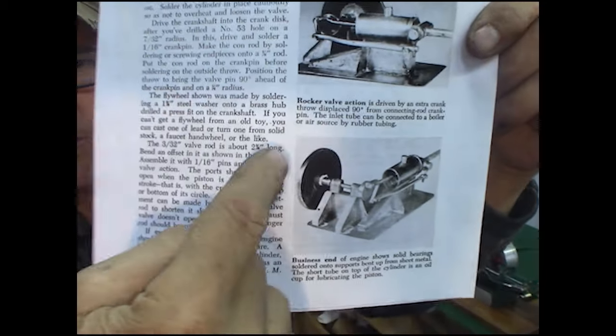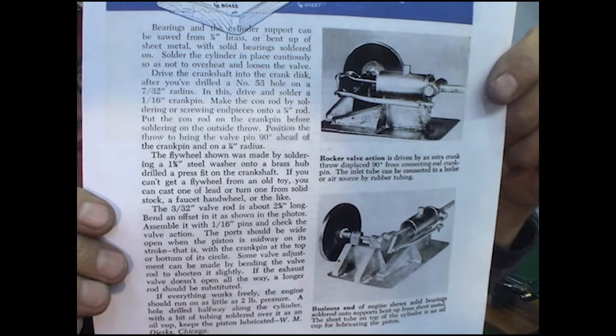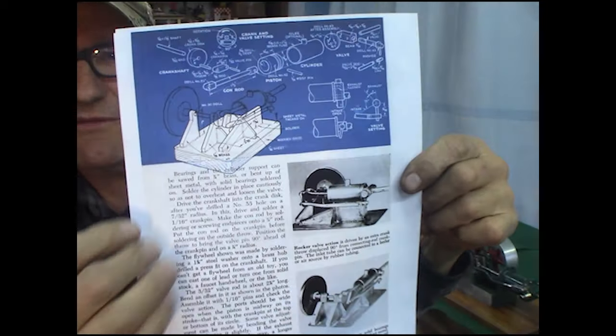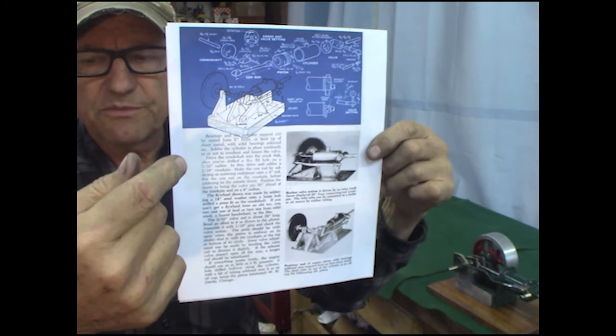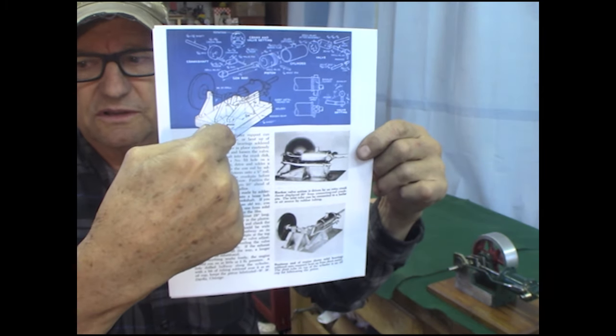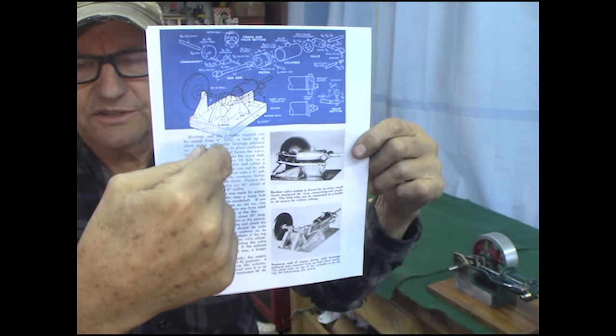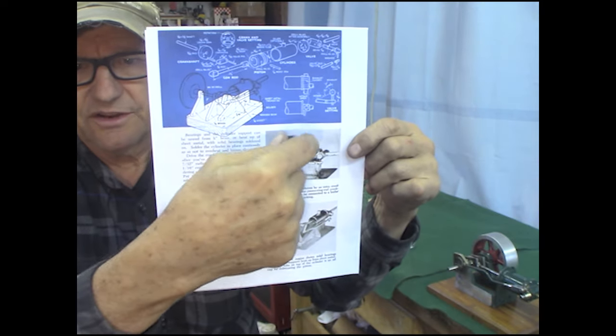They used a big washer for a flywheel and it has a rotary type of valve where it's just a pin with a straight hole going into the cylinder on the cylinder head.